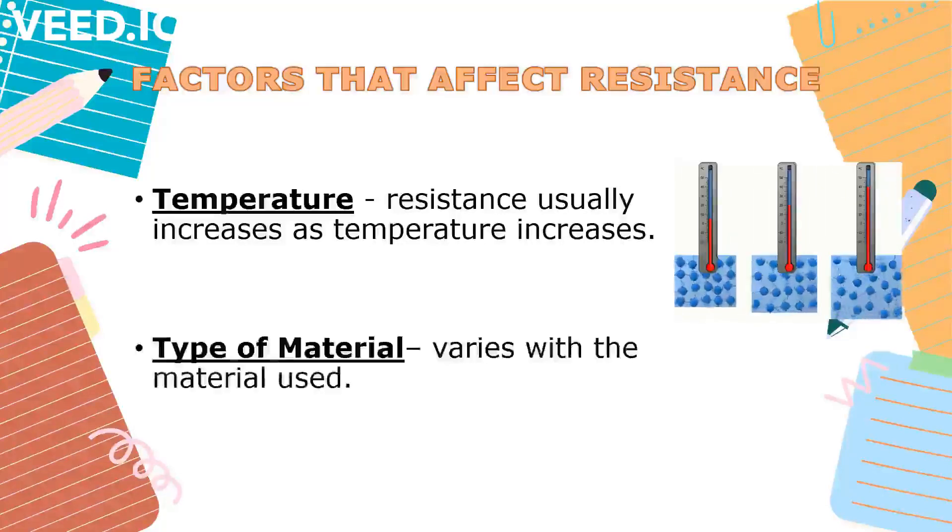Lastly, type of material. It varies with the material used. Different materials have different amounts of resistance. Materials that allow electrons to travel through, like copper wires, are called conductors.